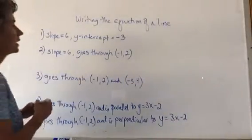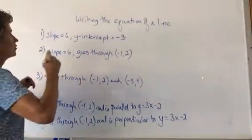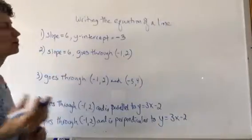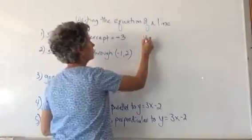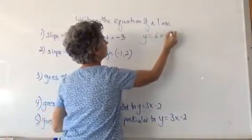If you want to write the equation of a line, generally we use either slope-intercept form or point-slope form. So if you know the slope and the y-intercept, just put them right in: y equals 6x minus 3.